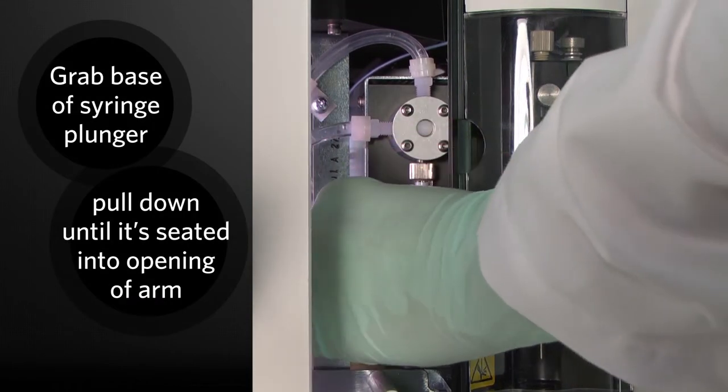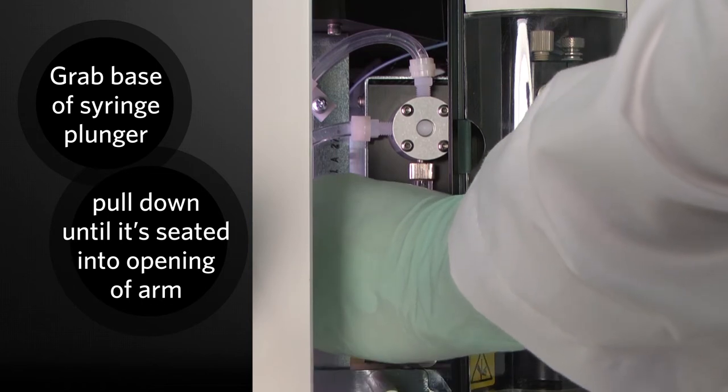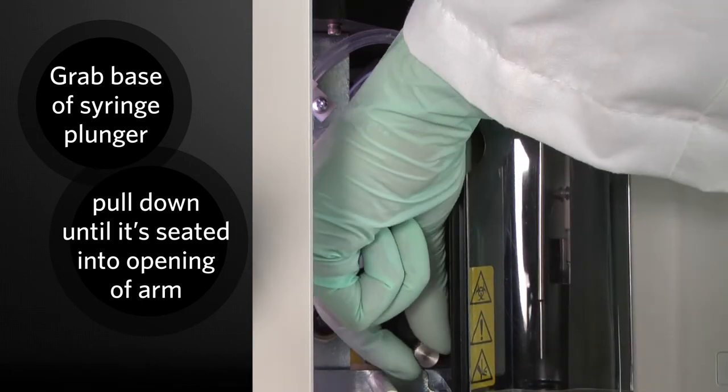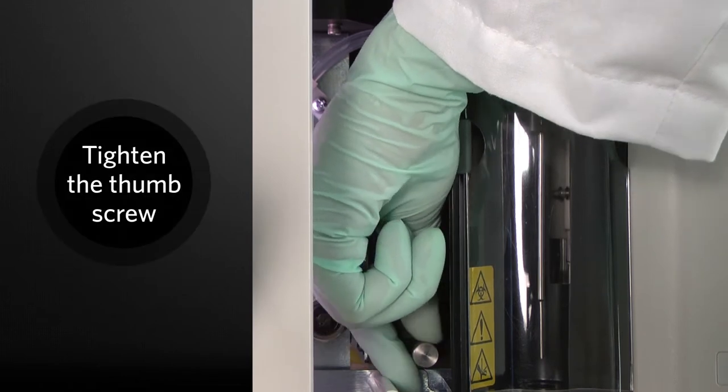Grab the base of the syringe plunger and gently pull on it until it is fully seated into the opening of the arm. Tighten the thumb screw on the syringe arm.